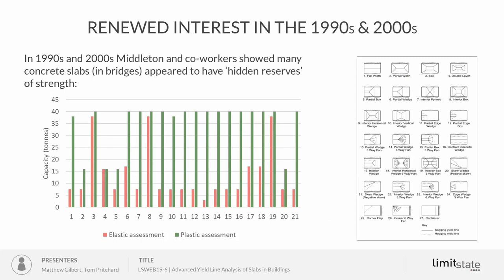Around 20 years ago there was renewed interest in the method. Middleton and co-workers at the University of Cambridge showed that many concrete slabs in bridges had hidden reserves of strength. Many bridges that had been designed for a given loading were condemned when vehicle gross weights increased, and elastic assessment suggested insufficient capacity. However, when plastic analysis was applied, many of those bridges were found to have adequate capacity — the vast majority were found to be perfectly satisfactory.